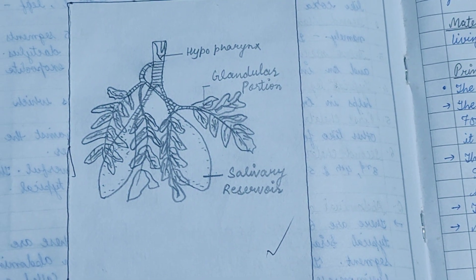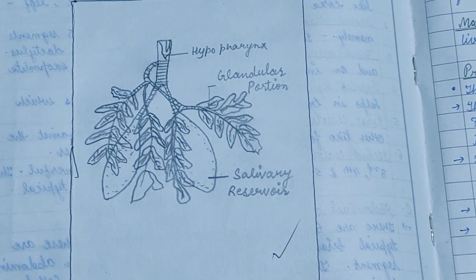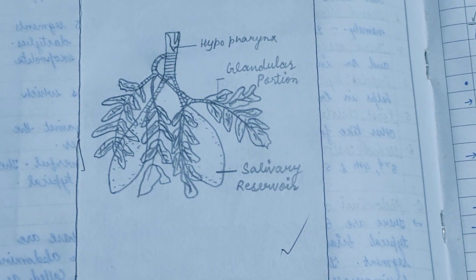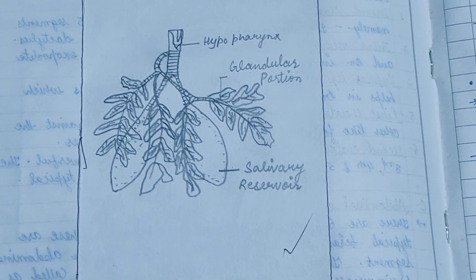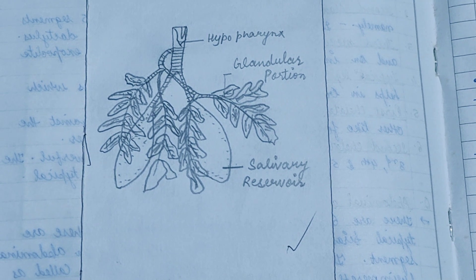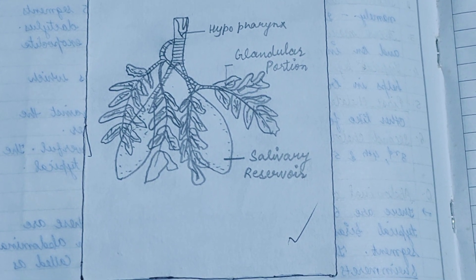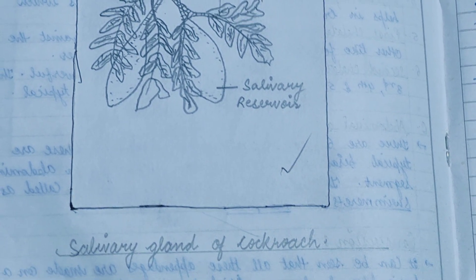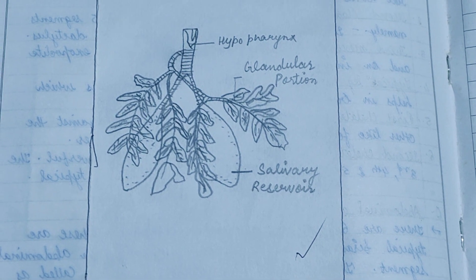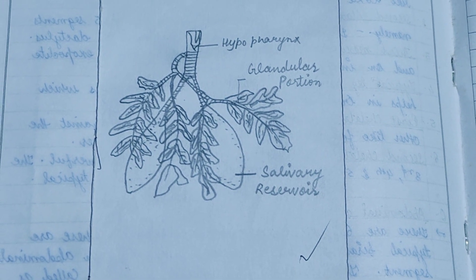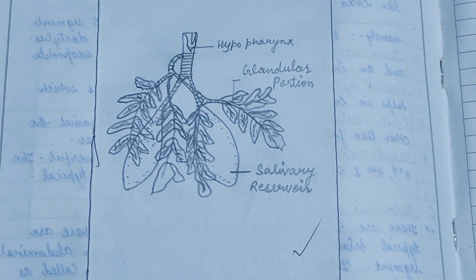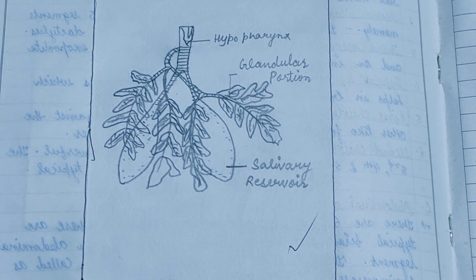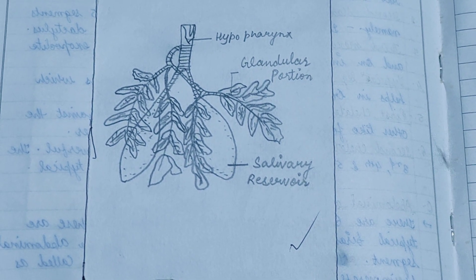The diagram of the salivary gland of the cockroach is shown here. There is a hypopharynx, glandular portion, and salivary reservoir. There is a leaf-like structure called the reservoir of the gland, known as the glandular portion.